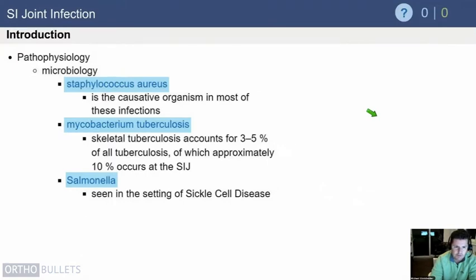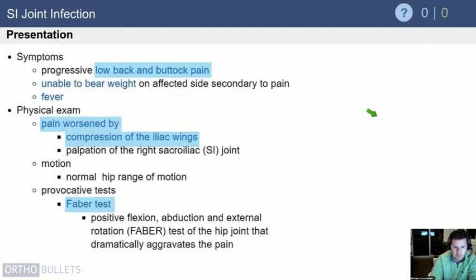The most common organism — and this is probably the most important thing to understand — is staph aureus, just like in other musculoskeletal infections. However, there is an asymmetric increase in risk from mycobacterium tuberculosis. Skeletal tuberculosis accounts for three to five percent of all tuberculosis, but ten percent of those cases involve the SI joint. In sickle cell disease, you also think about organisms like salmonella.